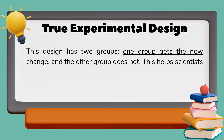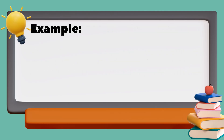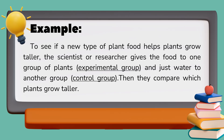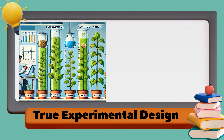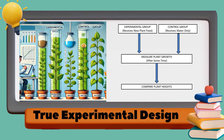In true experimental design, there are two groups: one gets the new change and the other does not. This helps researchers know if the change really made a difference. For example, to see if a new plant food helps plants grow taller, one group gets the plant food (experimental group) and the other gets only water (control group). The heights of both groups are measured and compared to determine if the plant food influenced growth.